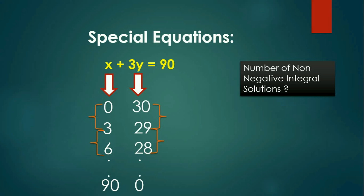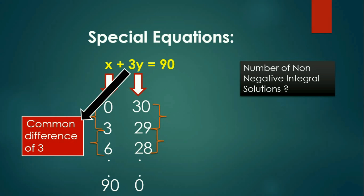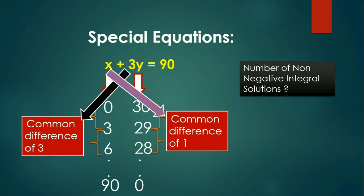What pattern do we see here? We see that 0 and 3, 3 and 6 are at a common difference of 3, so the values of x are at a common difference of 3. What exactly is 3? It is the coefficient of y. Similarly, the values of y are at a common difference of 1, and 1 is the coefficient of x. So the values of x are at a common difference of 3 — the coefficient of y — and values of y are in arithmetic progression with common difference being the coefficient of x.